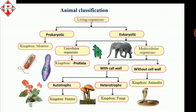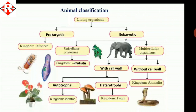All living organisms are classified into two categories: prokaryotic and eukaryotic. All organisms in kingdom Monera — bacteria and blue-green algae — are prokaryotic. The rest, unicellular and multicellular organisms, are eukaryotic. All unicellular organisms in Protista are unicellular. Multicellular organisms are divided into those with a cell wall and those without.